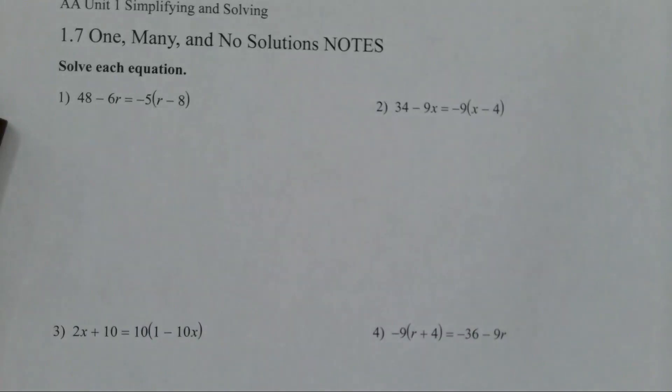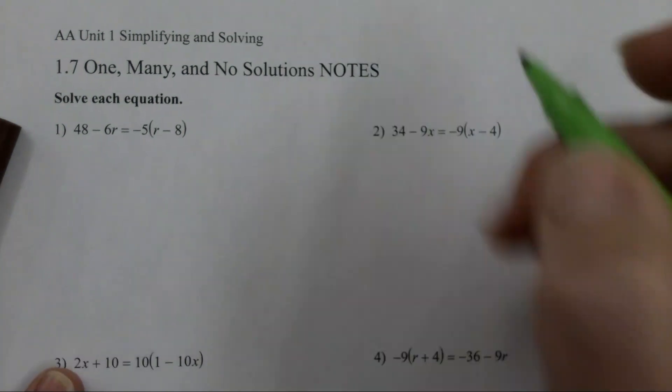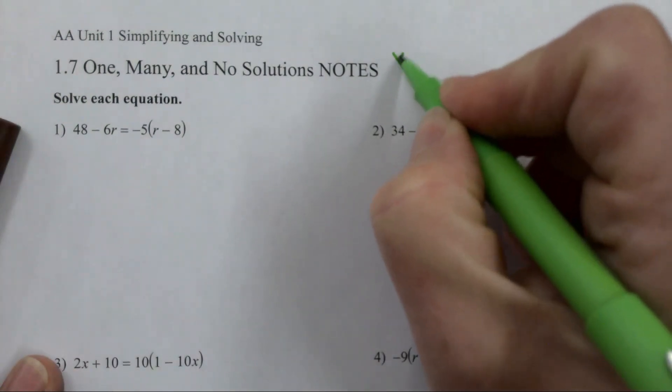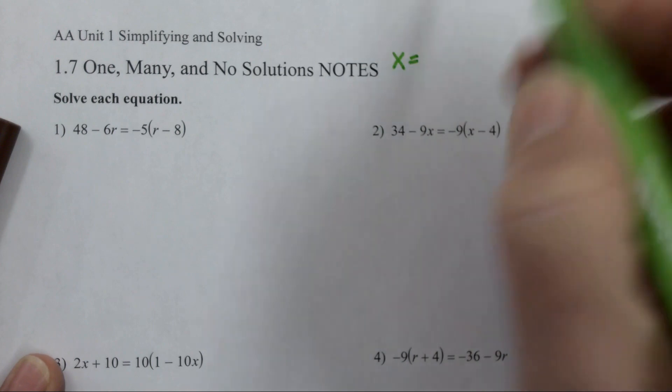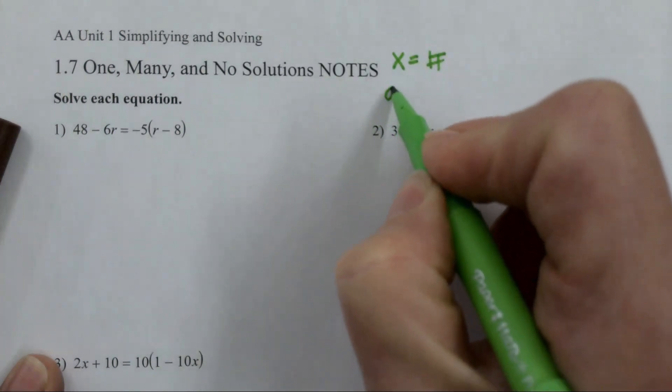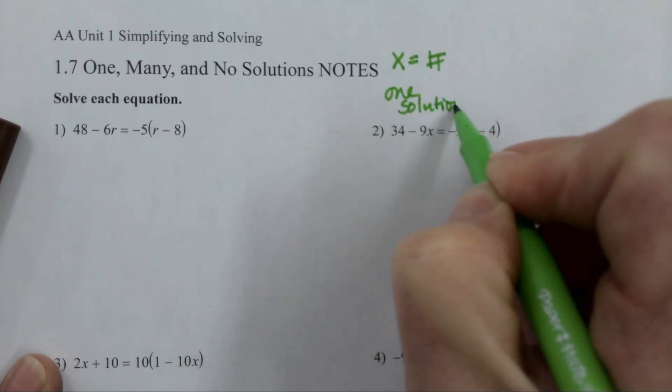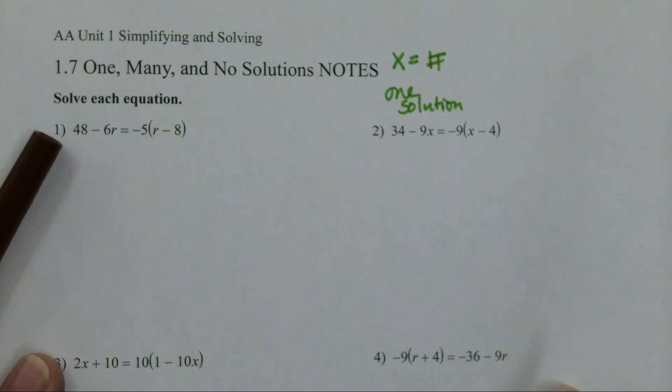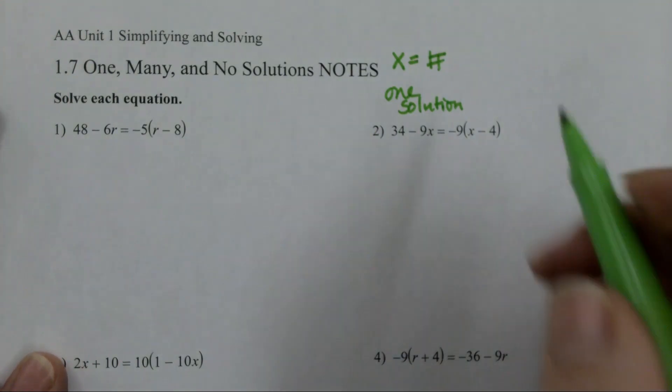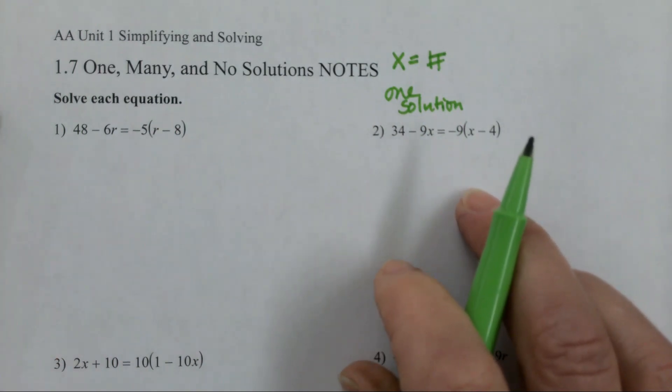We're looking for one, many, and no solutions. Remember, the variable can change, but if you end up with X equals a number, any number, that means we have one solution. X equals a number - that number can be zero, it can be a fraction, it can be a decimal.